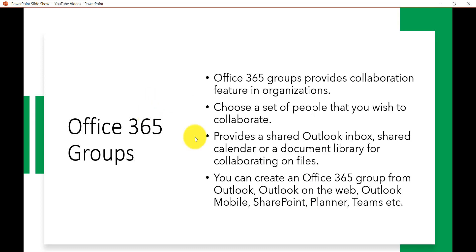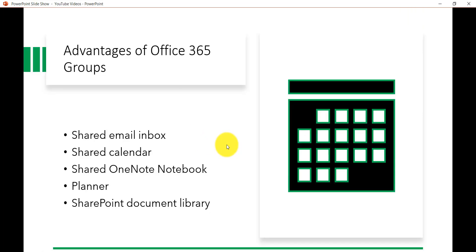Now what are the advantages of Office 365 Groups? You will get a shared email box with an email address so that you can accept email messages from outside organizations as well. You can send out email to everyone within that group. You will also get a shared calendar for scheduling events related to the group.